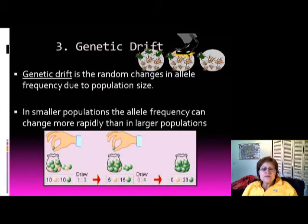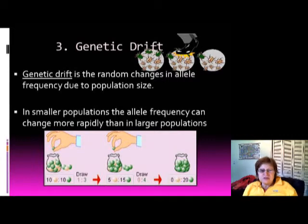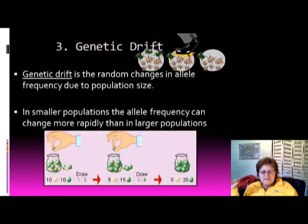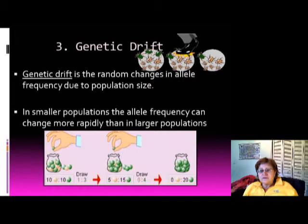The next mechanism is genetic drift — random changes in allele frequency due to population size. In a small population, changes have a much better chance of spreading, whereas in a large population it takes much longer for changes to take hold.